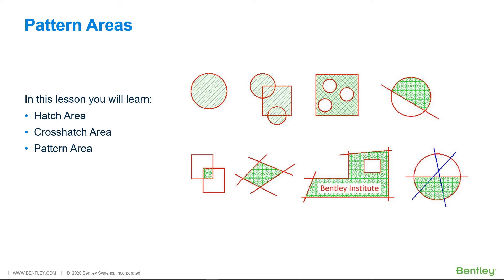There are three tools you can use to hatch or pattern areas. Hatch Area is used to pattern an area with parallel lines in one direction. Cross Hatch Area is used to pattern an area with parallel lines in two directions. Pattern Area is used to pattern an area using a cell as the repeating pattern. You can find these tools in the Annotate tab in the Patterns ribbon group.